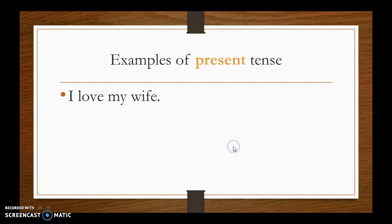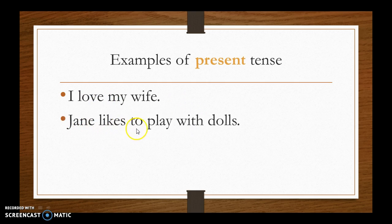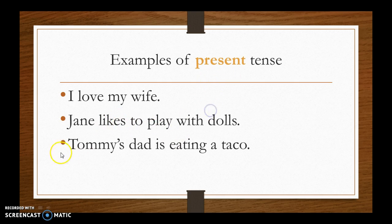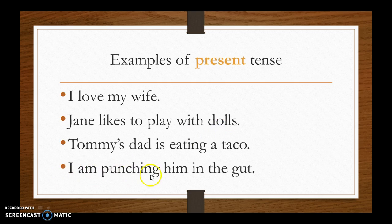An example of present tense: 'I love my wife' — not 'I loved'; I still currently love her, so that's present tense. 'Jane likes to play with dolls' — likes, not liked; that's still going on. 'Tommy's dad is eating a taco' — eating is present tense. 'I am punching him in the gut' — I am currently doing it, not 'I punched.' Because a narrative is a story about what happened to you, you want to use past tense since it happened in the past. So for this paper, write it in past tense.